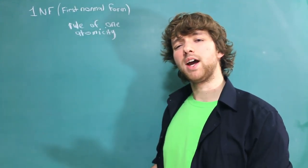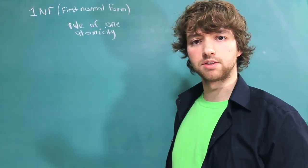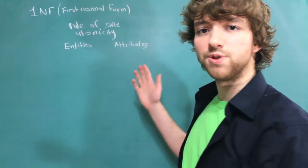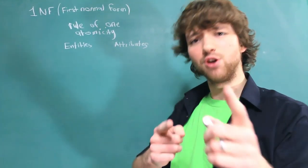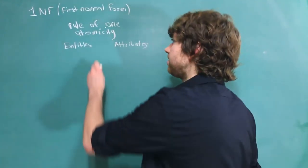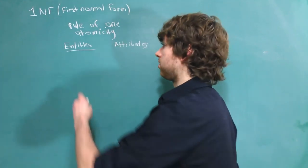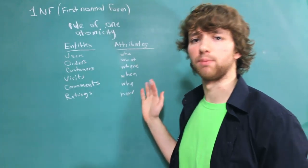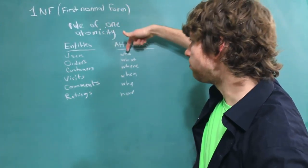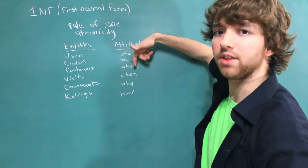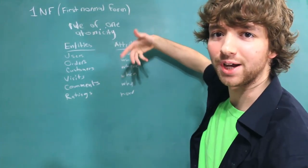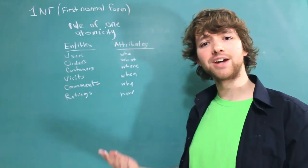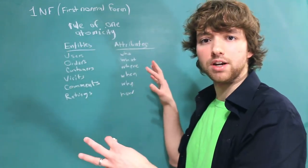When you start thinking about what kind of data to store inside a database, you start to separate things into entities and attributes. Even if you don't do this on paper, I know you do it in your mind. Entities are things we store data about. Here are a bunch of examples of entities we could have. And attributes are anything we want to store about them. So for example, on the orders, we could say who bought it, what they bought, where they bought it, when did they buy it. How could be like credit card, cash, all that stuff. So that is kind of how you separate data.